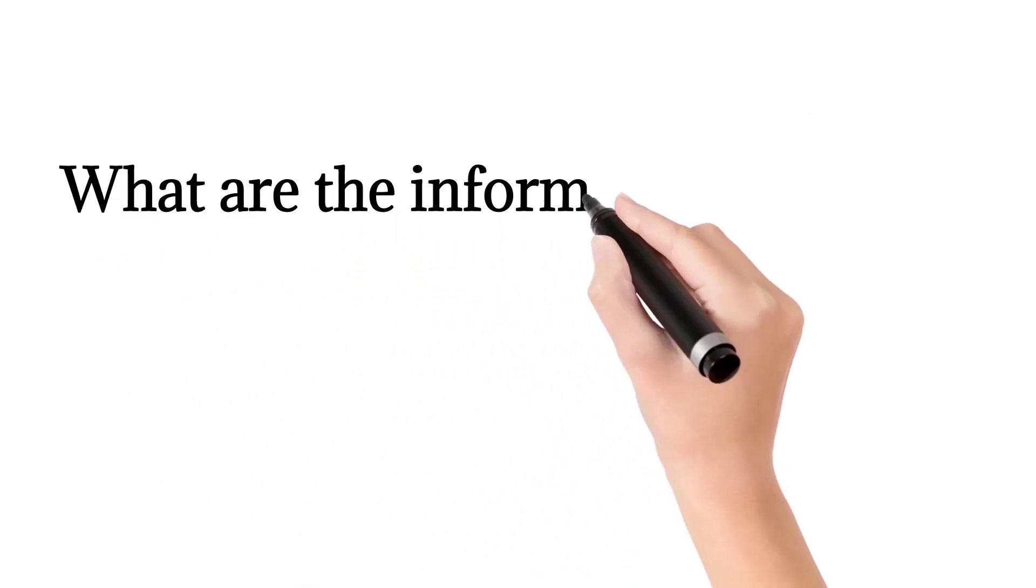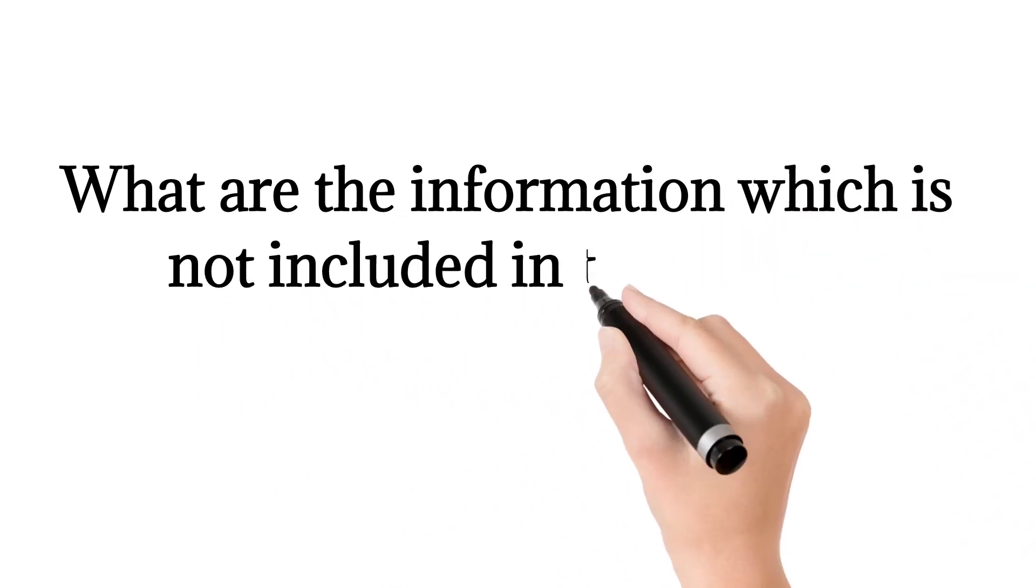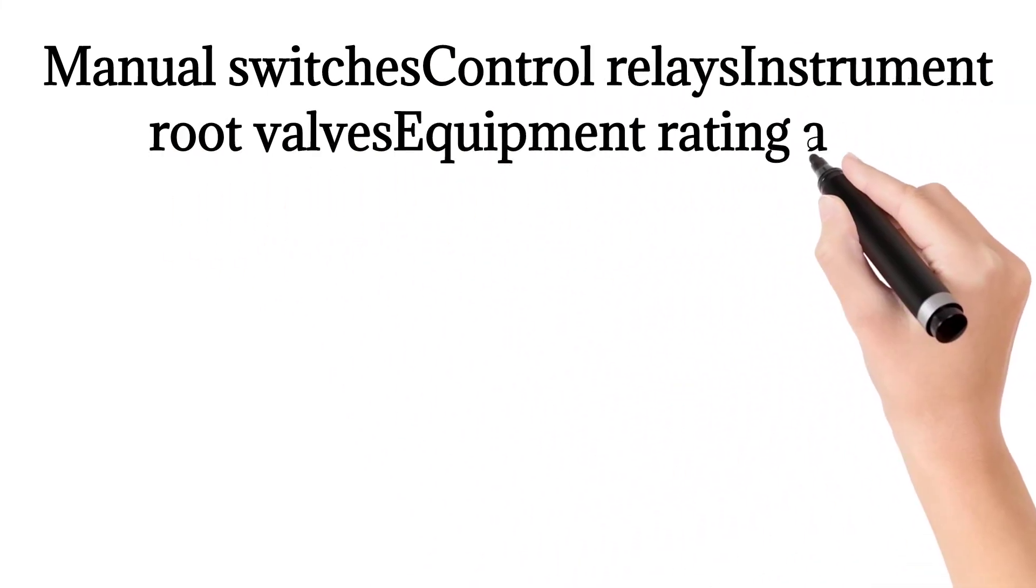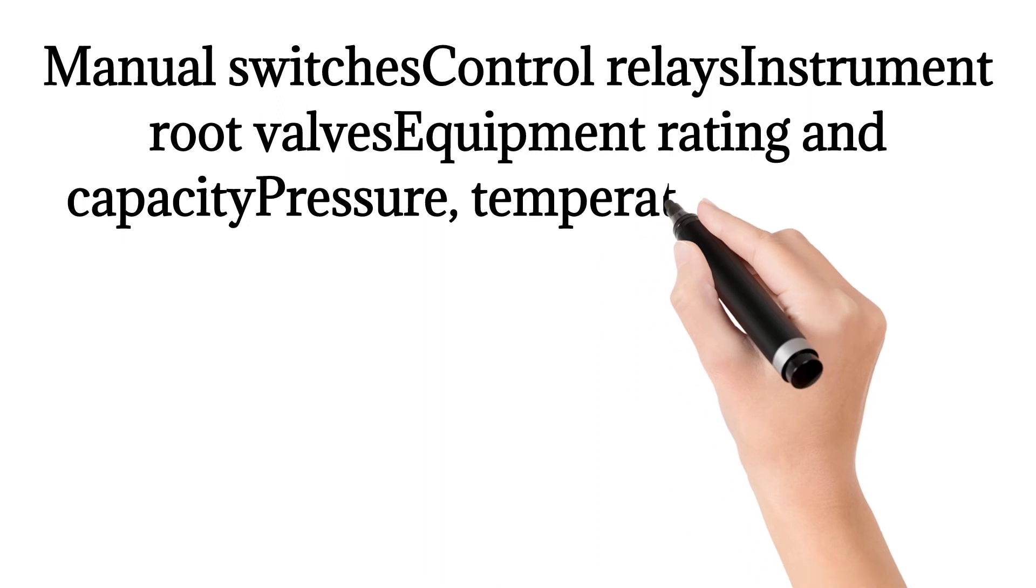What are the information which is not included in the P&ID? Manual switches, control relays, instrument root valves, equipment rating and capacity, pressure, temperature, and flow data.